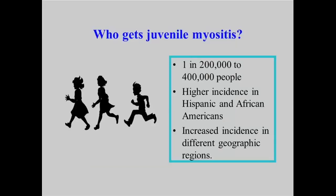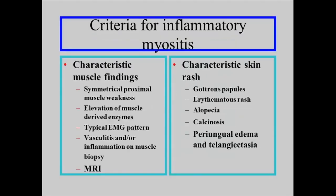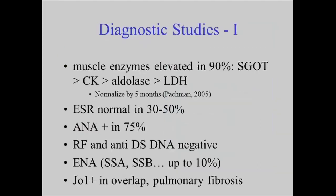Juvenile dermatomyositis affects about 1 in 200,000 to 400,000 individuals, making it a very rare disease. There is a higher incidence in darker-skinned individuals and in geographic areas receiving more sunlight, potentially closer to the equator, because sun exposure is one of the factors potentially related to the onset of the disease.